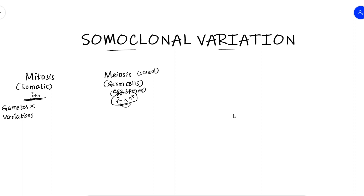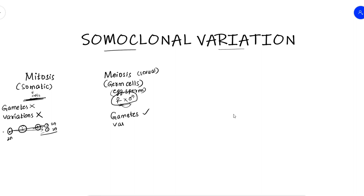In mitosis, the same things happen. It is 2n. First, the nucleus divides to form a new nucleus; second, the cytoplasm divides. The result is 2n and 2n — it is the same as the parents. But in meiosis, there are gametes and there are variations.